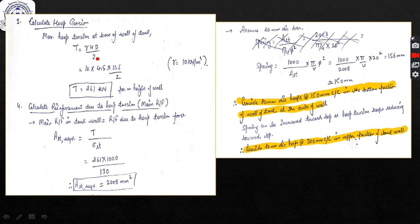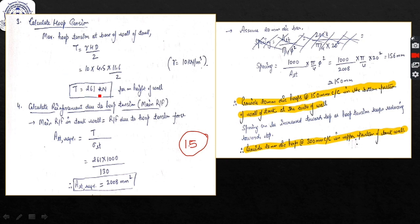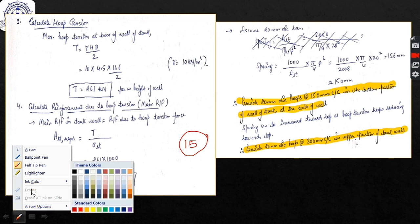We calculate the hoop tension T = gamma·h·D/2, where gamma = 10 kN/m³ for water. We get T = 261 kN. Note that in working stress method we do not multiply loads by a factor of 1.5 as in limit state method — no such load factors are applied.